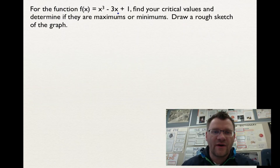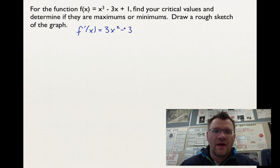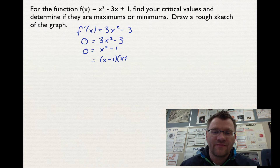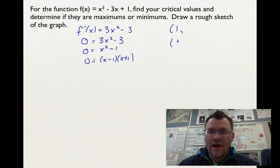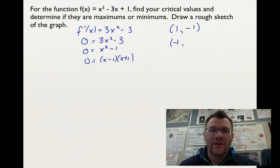For the function f(x) = x³ − 3x + 1, find the critical values and determine if they are maximums or minimums, then draw a rough sketch. We find f′(x) = 3x² − 3, and set it equal to zero. Dividing by 3 gives x² − 1 = 0, which factors as (x − 1)(x + 1), so x = 1 and x = −1. Plugging x = 1 into the original: 1 − 3 + 1 = −1. Plugging x = −1: −1 + 3 + 1 = 3. So our two points are (1, −1) and (−1, 3).